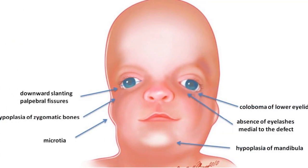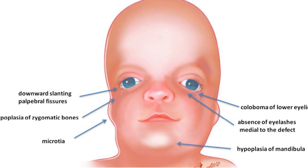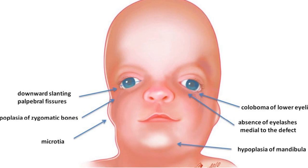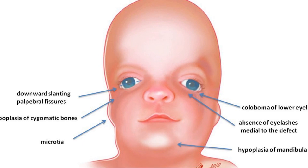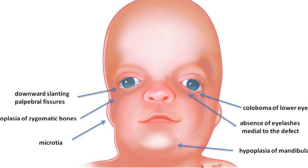Other features include absence of eyelashes in the lower eyelid, and the eyes appear as if looking downward. All features are basically down and low. There is also hypoplasia of the mandible, meaning mandibular retrognathism, as well as micrognathia — a small chin.